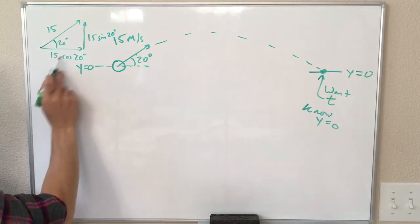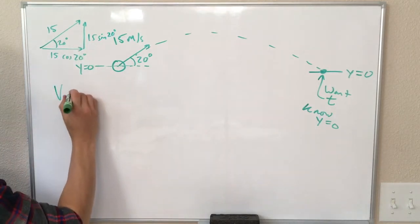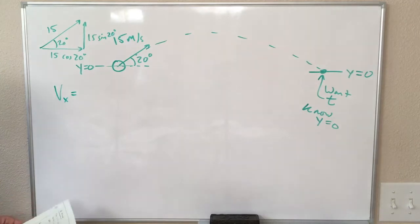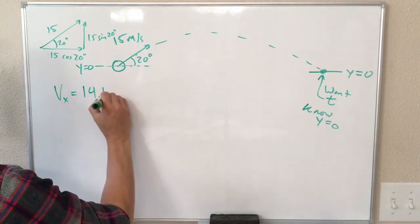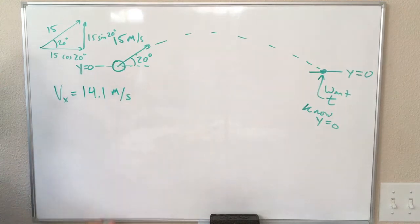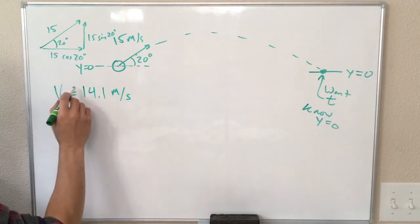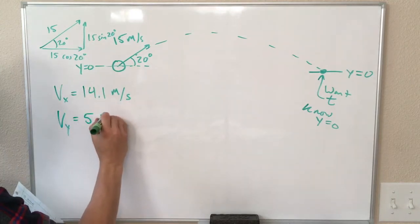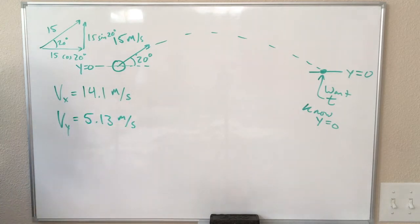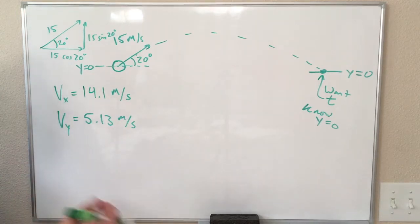So this is Vx, this is Vy. Vx is equal to 15 times the cosine of 20, which is 14.1 meters per second. And the y component of the velocity is 15 times the sine of 20, which is 5.13 meters per second. I'm rounding everything to three sig figs, so if you round things differently, you might get slightly different answers, but you should be close to what we get at the end.